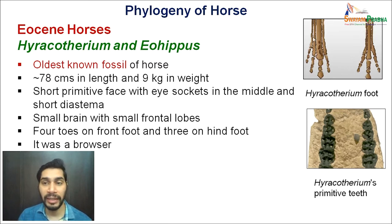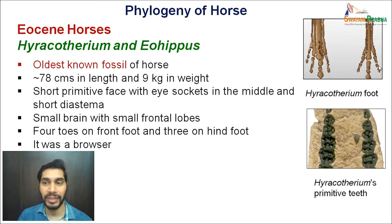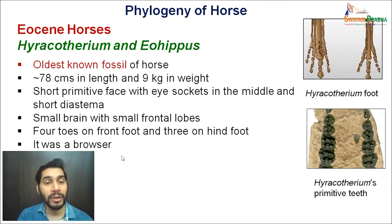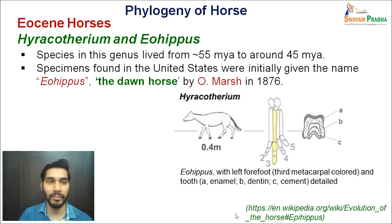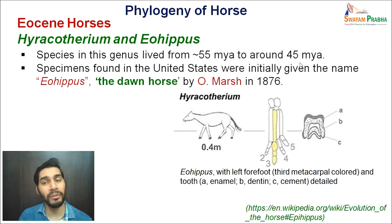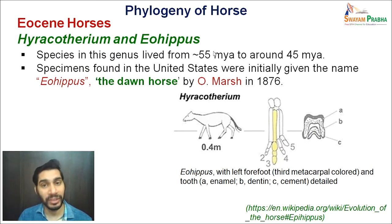Focusing on their limbs: the front foot or forelimb had four toes, whereas the hind foot or hindlimb had only three toes. Their dentition was more suitable for browsing — not close to hypsodont dentition but brachydont, suitable for browsing feeding habits. The species in this genus lived from around 55–60 million years ago to around 45 million years ago — almost 10 million years of fossil record.